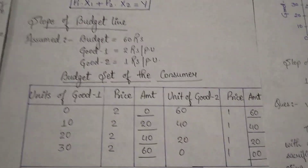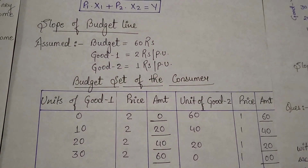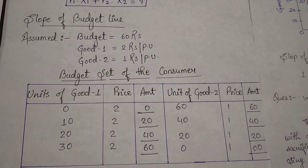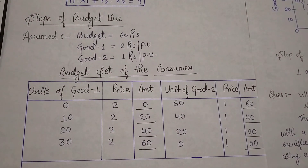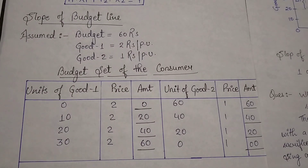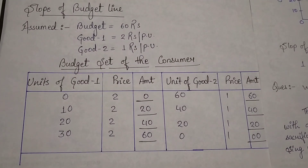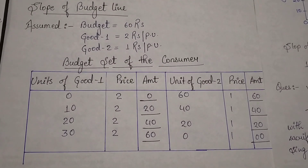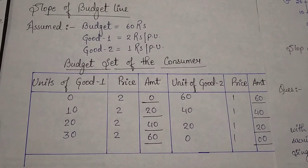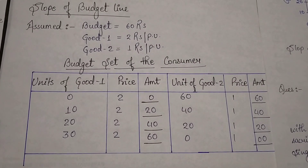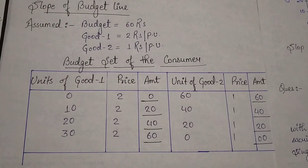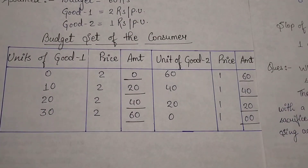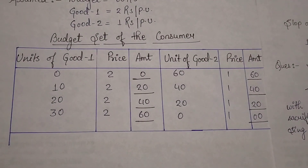Now I've taken an example to show the slope of budget line and diagram. Consider your budget is 60 rupees. For good one the price is 2 rupees per unit, and for good two the price is 1 rupee per unit. I've prepared a budget schedule: units of good one are 0, 10, 20, 30, and since price is 2, the amounts paid are 0, 20, 40, 60 respectively.